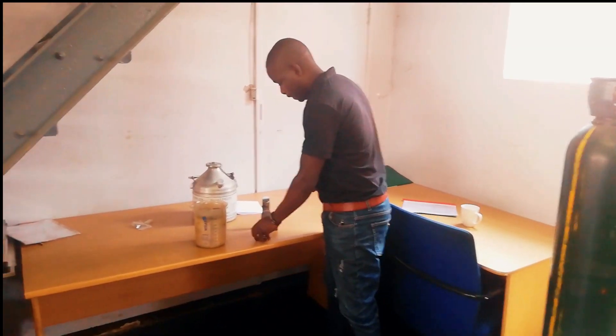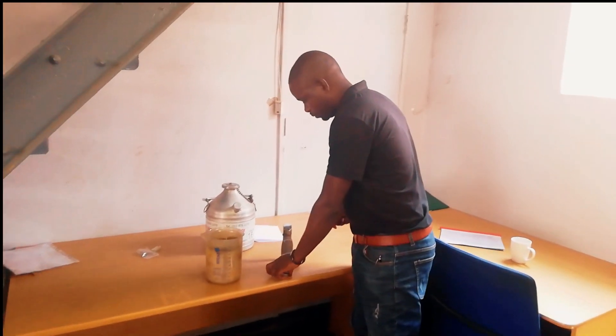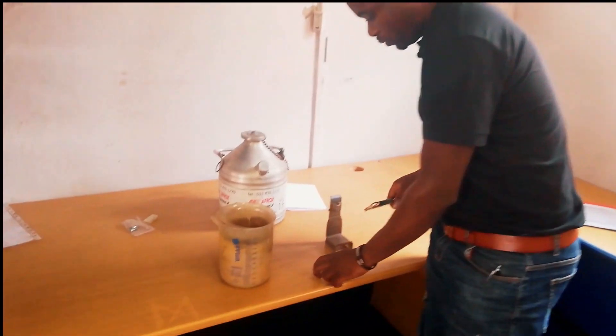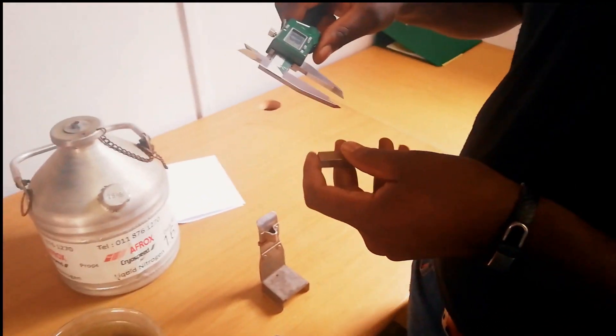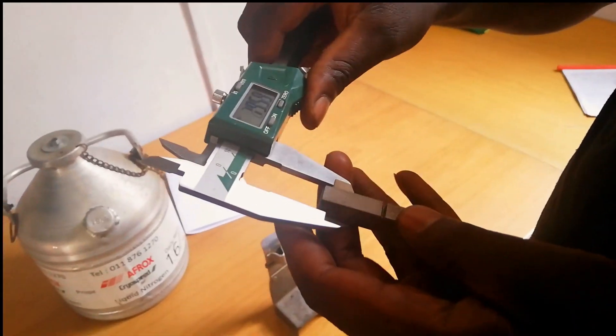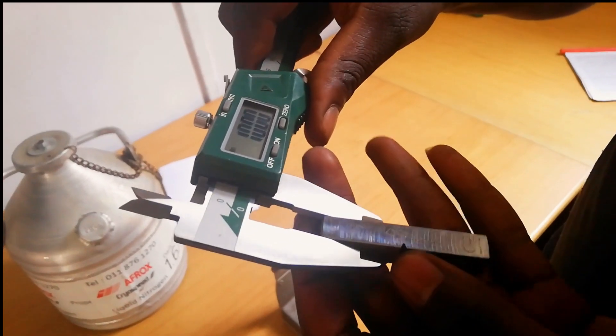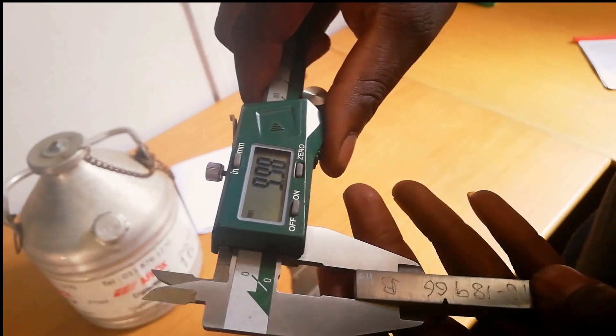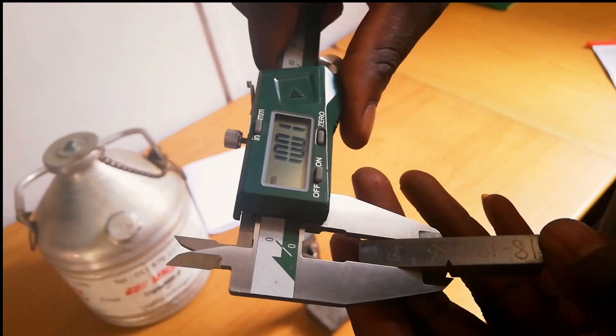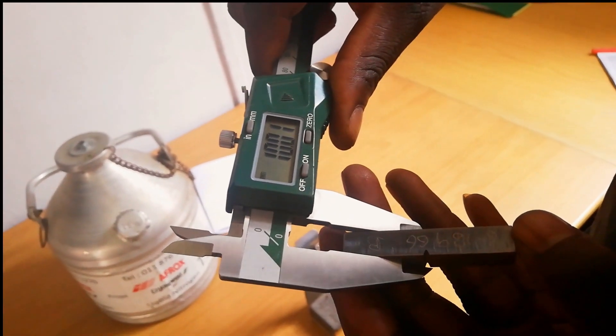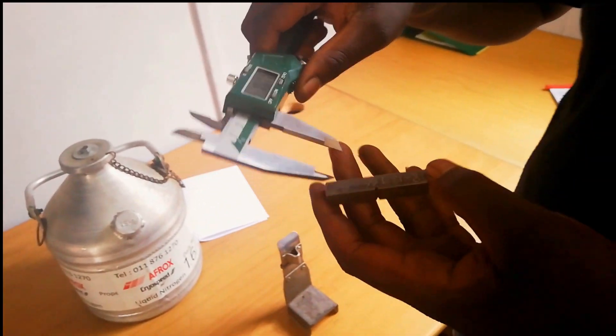So now, you can see we are busy doing the impact test. And this Charpy test needs to go to 197 degrees Celsius. So my friend here, Dennis Bota, is trying to measure the sample. As you can see, it needs to be 10 millimeter, more or less, 0.05. And this one is 10.01, which is very good.